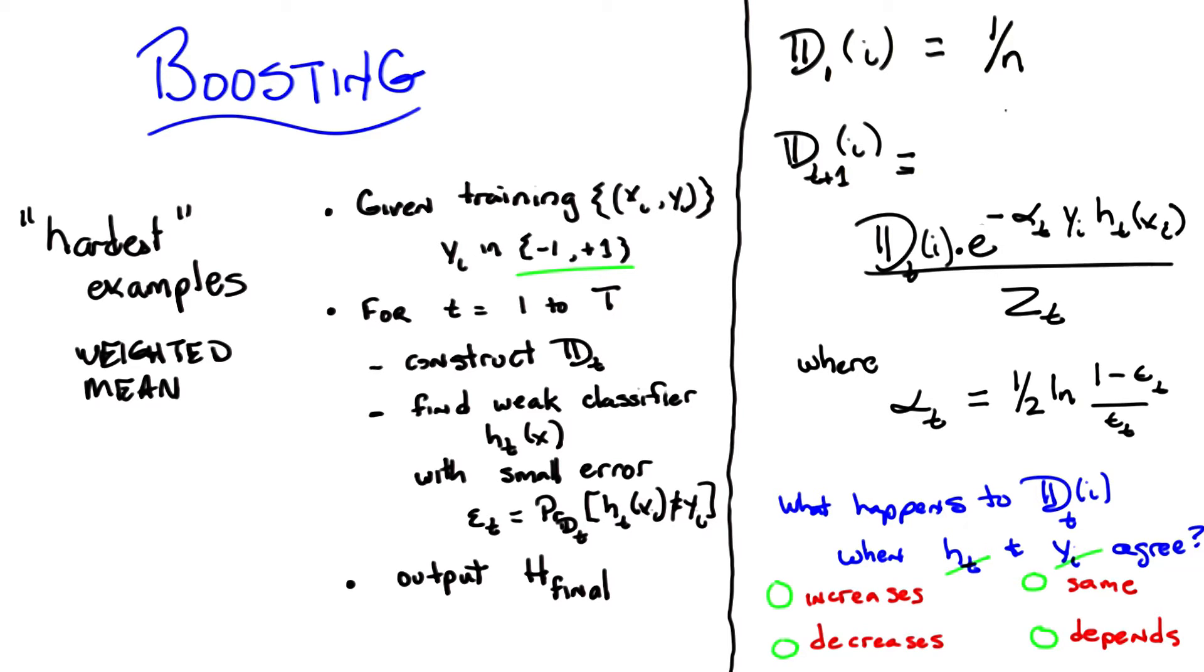So when we multiply them together, we get 1. 1 times whatever our alpha thing is, some positive number is going to be positive. We're negating that, so it's negative.